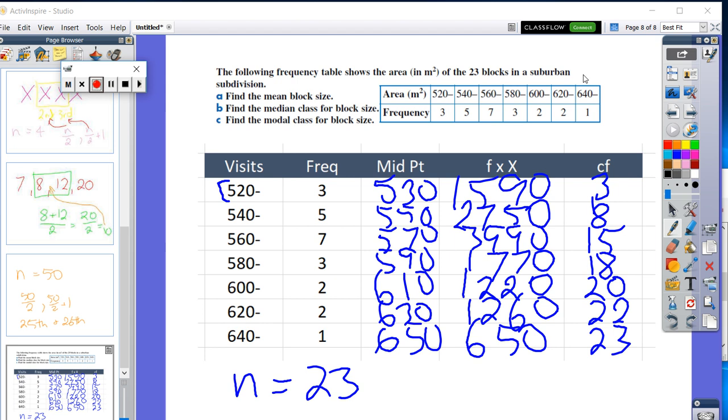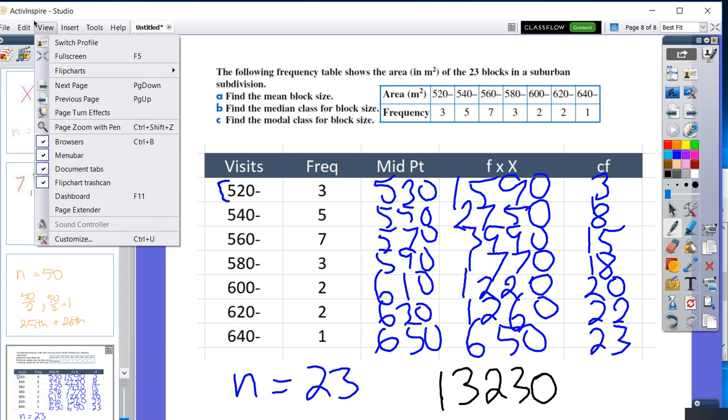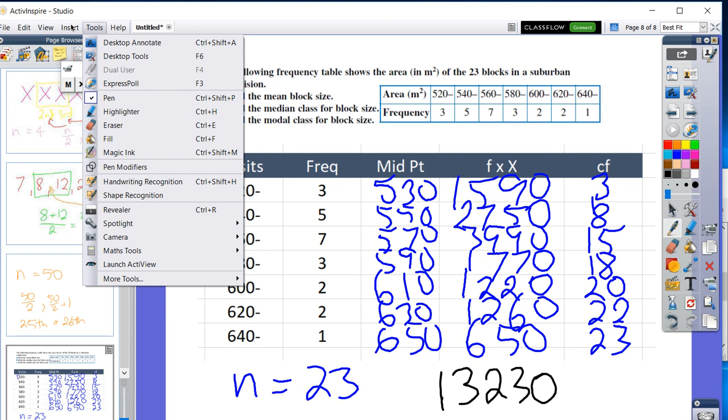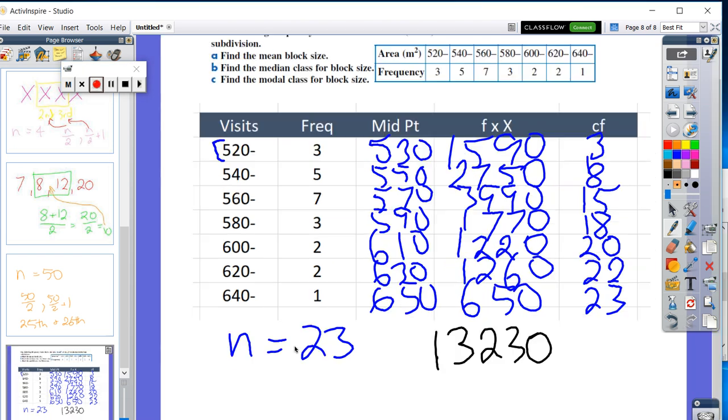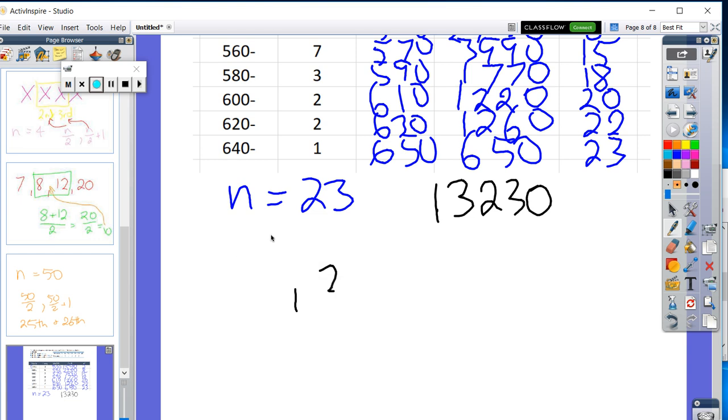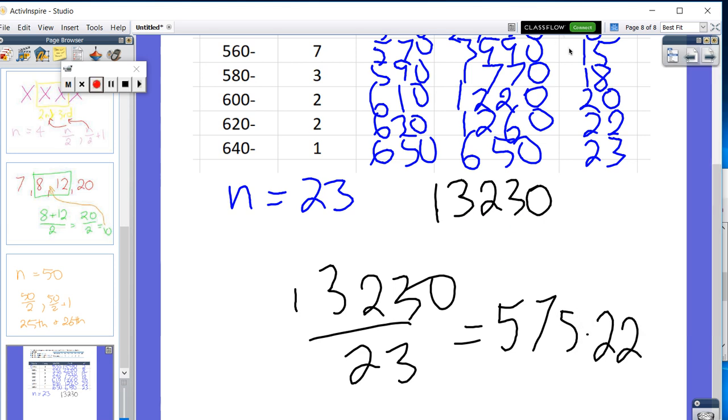Now, this all adds up to 13,230. And if I just scroll down here and I do 13,230 divided by 23, we'll find out that is 575.22. If we just go back up and have a look at the question.